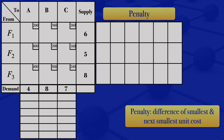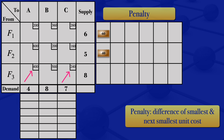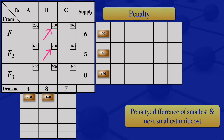For row F1, the smallest and next smallest unit costs are 200 and 260, so their difference is 60. For row F2, the smallest and next smallest give a difference of 40. For row F3, the difference is 160. For column A, the difference is 200. For column B, the difference is 160. For column C, the difference is 80.